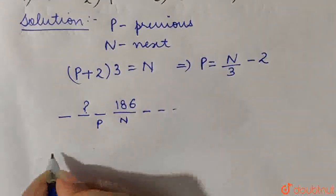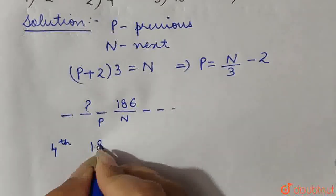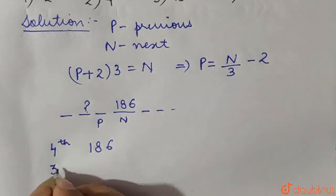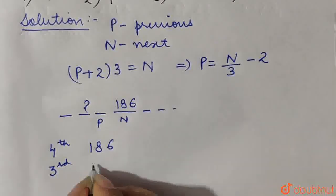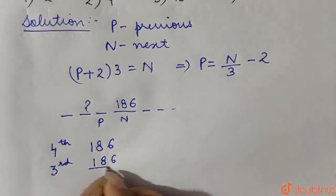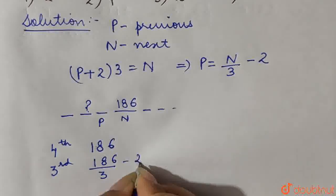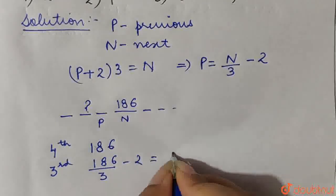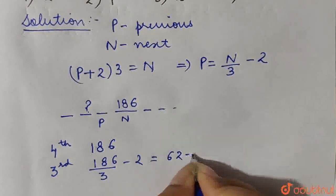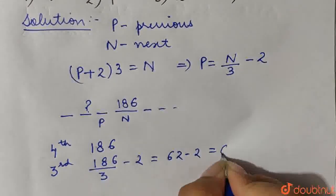Now since the 4th term is 186, so the 3rd term, that means the previous term can be calculated as follows, 186 divided by 3 minus 2, so 186 divided by 3 gives us 62 minus 2 that is equal to 60.